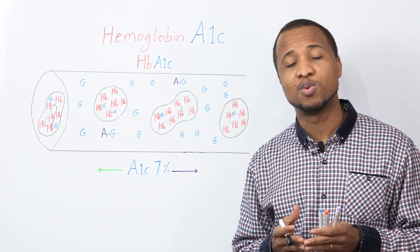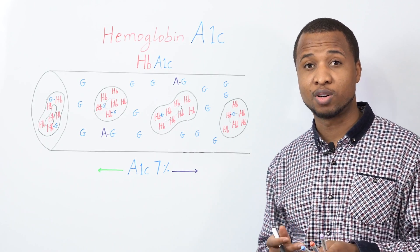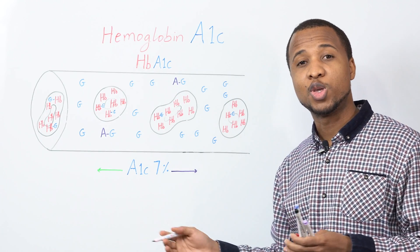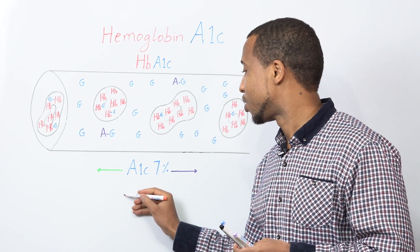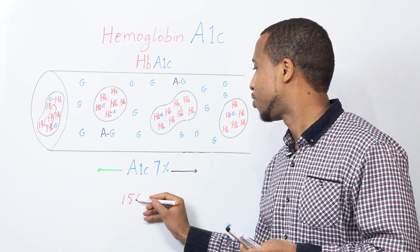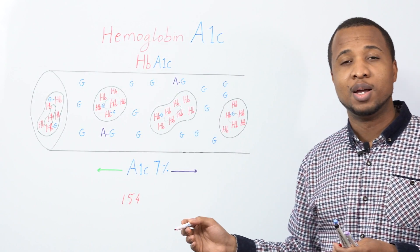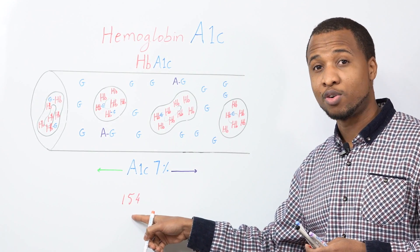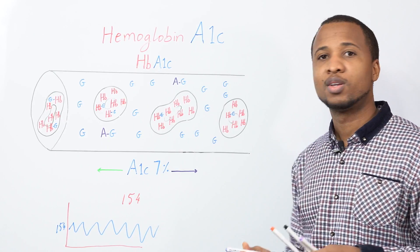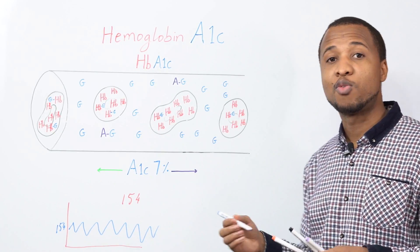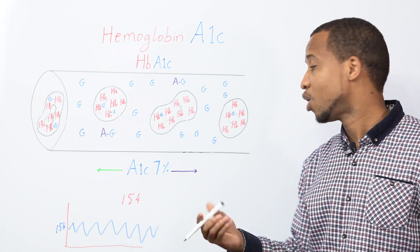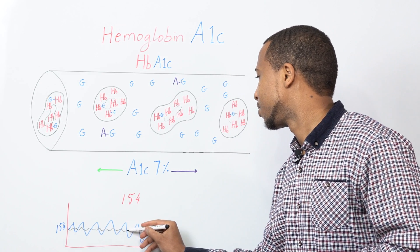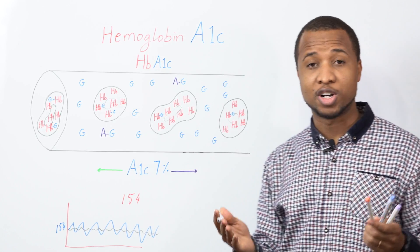And another problem with A1c is that it just tells you your average blood sugar. Let's say you have an A1c of 7. Now, your average blood glucose will be around 154. But this does not tell you that it's always around 154. This will give you an average of 154. But this one will also give you an average of 154.